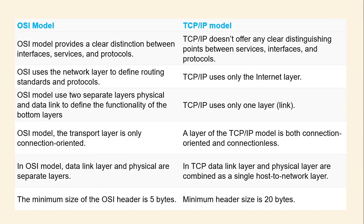Along with the OSI model, we also have the TCP/IP model, and the two are different. OSI provides a clear distinction between interface, service, and protocols, and uses the network layer to define routing standards. TCP/IP doesn't offer a clear distinction between service, interface, and protocols, and uses only the internet layer. OSI uses two separate layers — physical and data link — for the bottom functionality, whereas TCP/IP uses only one link layer. In the OSI model, the transport layer is connection-oriented only, whereas in TCP/IP it is both connection-oriented and connectionless. The minimum OSI header size is 5 bytes, while the minimum TCP/IP header size is 20 bytes.